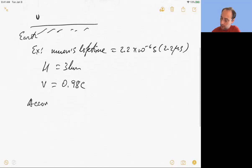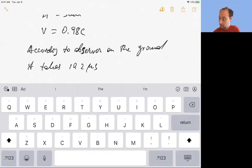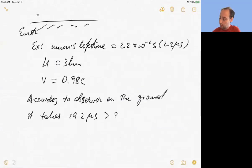According to an observer on the ground, it takes 10.2 microseconds to cross H, to cross this distance. So it ends up taking much longer than its lifetime, right? So this is much longer than 2.2 microseconds. So it seems the muon will decay way before it reaches the ground.